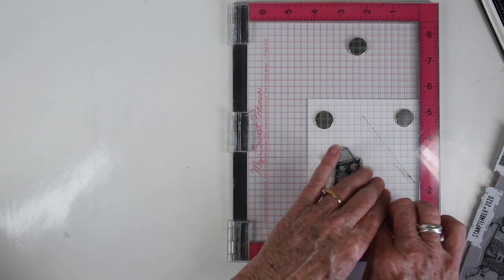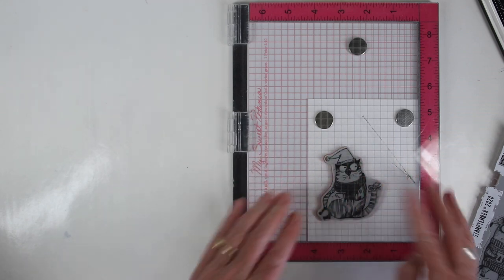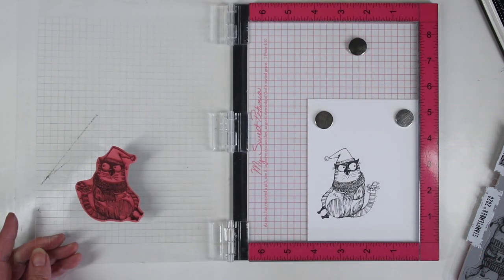So I've just used Simon Says Stamp Intense Black Ink. I'm making sure that I get really good pressure and I'm using my MISTI just in case I need to stamp it twice.